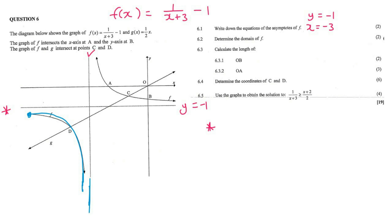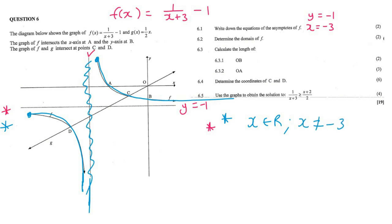If I carry on on the other side, I can carry on again, going from left to right. So we'll say that x is an element of all real numbers, but I wasn't able to go over this piece here. So x cannot be negative 3 — x can be all numbers except for negative 3.